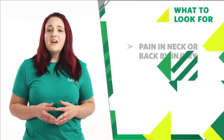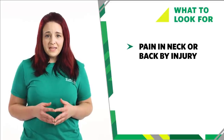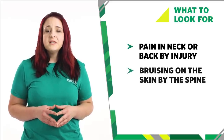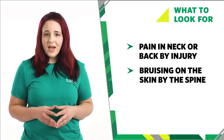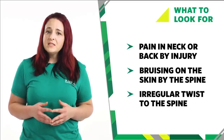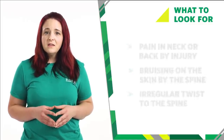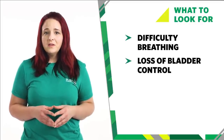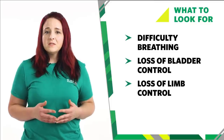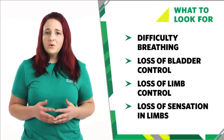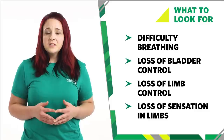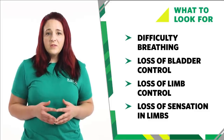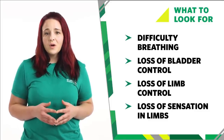If you suspect someone has a spinal injury, there are several key things to look for: pain in their neck or back where the injury occurred, bruising and tenderness in the skin over the spine, an irregular twist in the normal curve of the spine, breathing difficulties, loss of bladder and/or bowel control, loss of control of their limbs, loss of sensation or abnormal sensations such as tingling or burning, or their limbs feel stiff, heavy or clumsy.